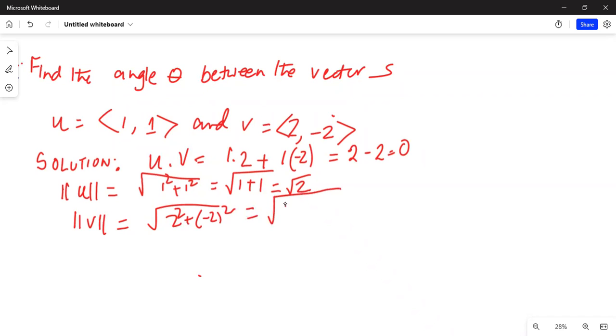which is equal to square root of 4 plus minus 2 times minus 2 is also 4 and this is square root of 8. So the cosine of the angle between the two vectors, cosine theta, is equal to u